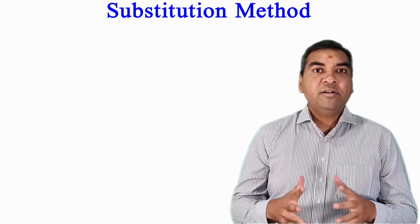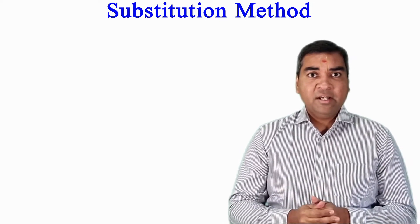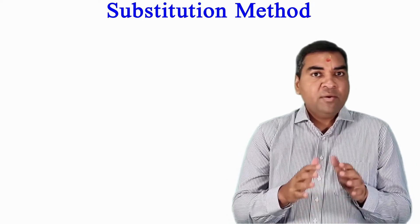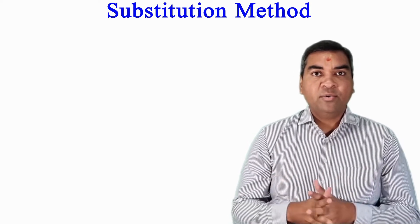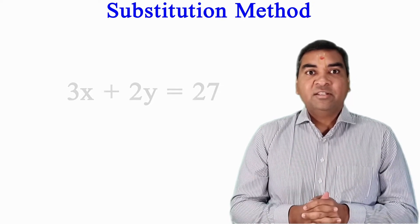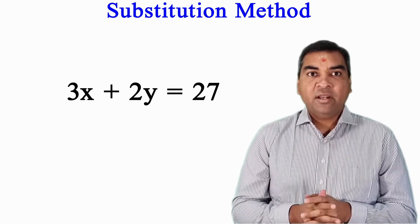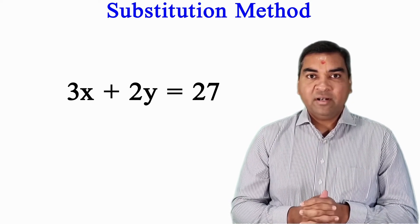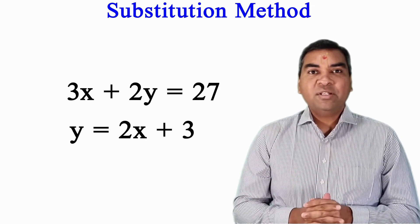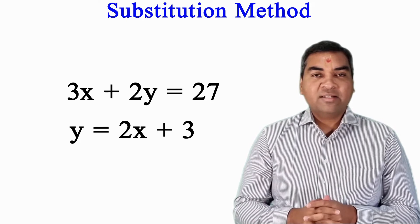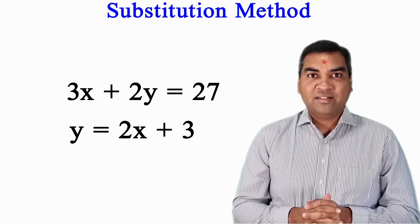Now, as you have learned the substitution method, I'd like to give you one practice question to master your skill. Use pen and paper, solve it, and put your answer in the comments. The question is: 3x plus 2y equal to 27, and y equal to 2x plus 3. Solve by substitution method and write x equal to what and y equal to what in the comments. I will respond. Thank you very much!